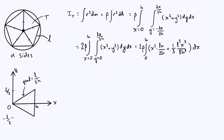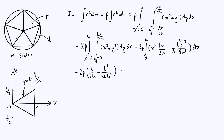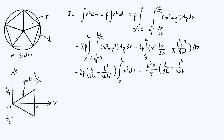Now we need to integrate with respect to x. Both terms are proportional to x³, so we can factor out constants: 2ρ times (L/2h) from the first term and L³/24h³ from the second, and the integral just becomes the integral from 0 to h of x³ dx. That evaluates to h⁴/4. So we end up with ρh⁴/2 times (L/2h + L³/24h³).